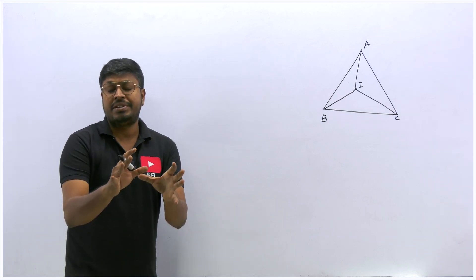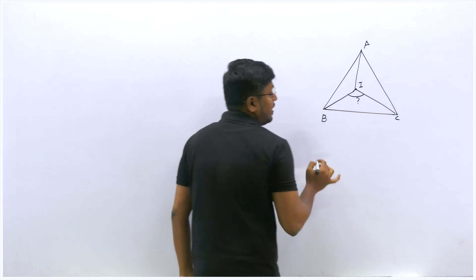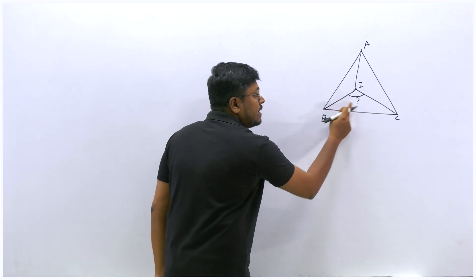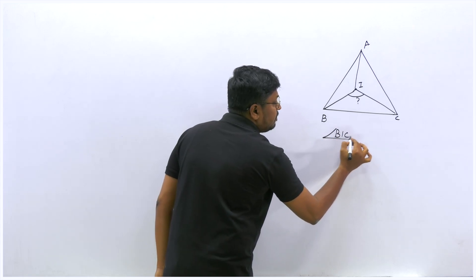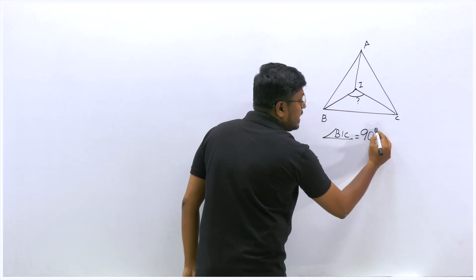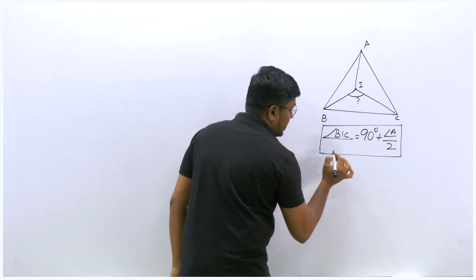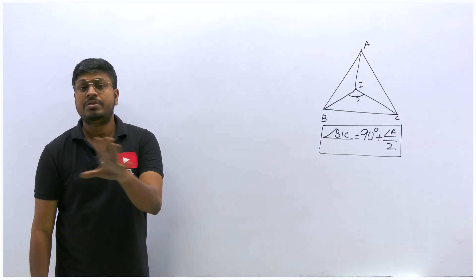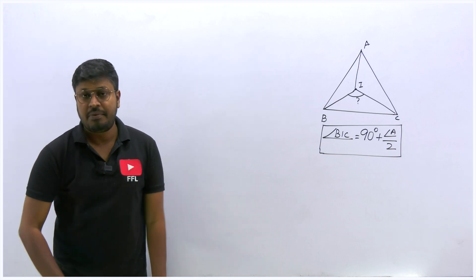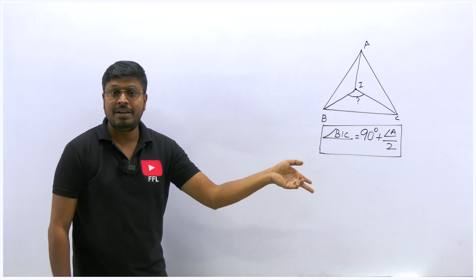In most exam questions — 99% of incenter questions — we are asked to find an angle of the incenter, specifically the angle BIC. For finding this, we have a formula: angle BIC = 90° + (angle A / 2). However, we don't always need to use this formula. If two angles are given in the question, we don't need the formula.